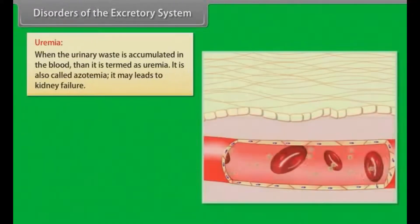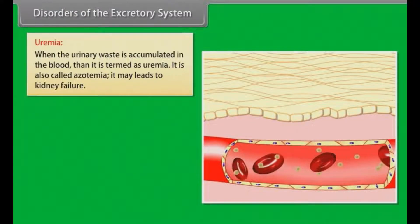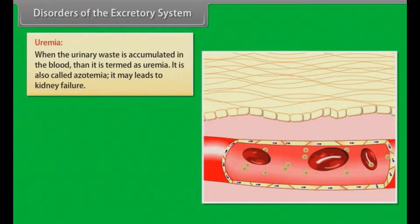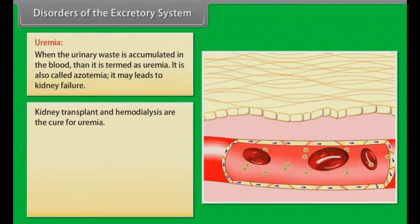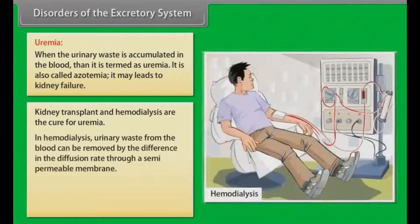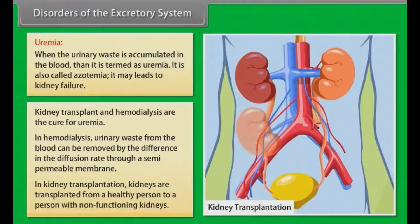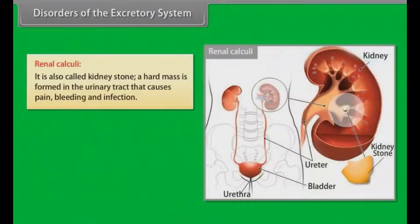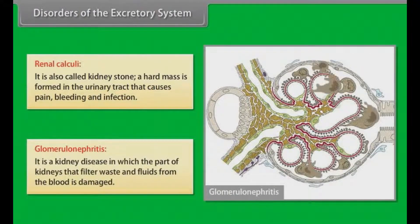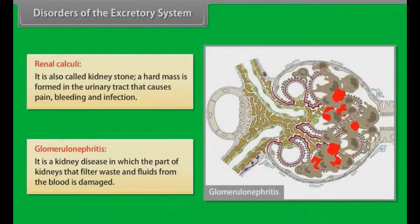Disorders of the excretory system. Uremia: when urinary waste accumulates in the blood, it is termed uremia, also called azotemia. It may lead to kidney failure. Kidney transplant and hemodialysis are cures for uremia. In hemodialysis, urinary waste is removed from the blood by the difference in diffusion rate through a semi-permeable membrane. In kidney transplantation, kidneys are transplanted from a healthy person to a person with non-functioning kidneys. Renal calculi (kidney stones): a hard mass forms in the urinary tract, causing pain, bleeding and infection. Glomerulonephritis: a kidney disease in which the part of the kidney that filters waste and fluids from the blood is damaged.